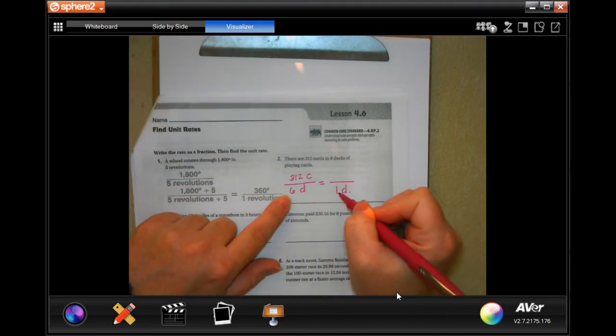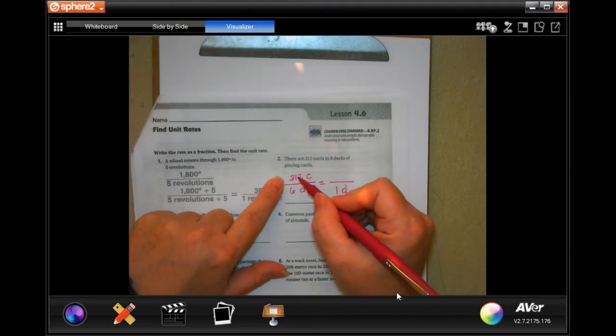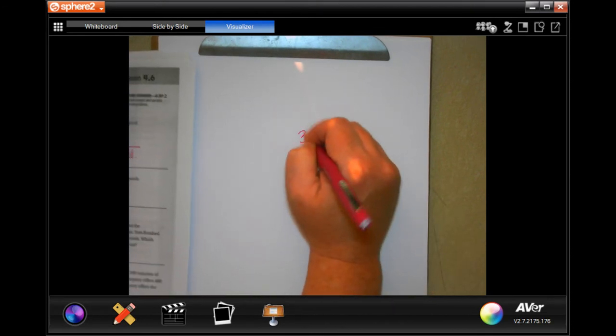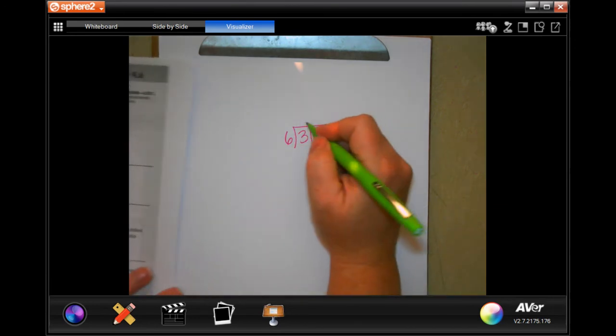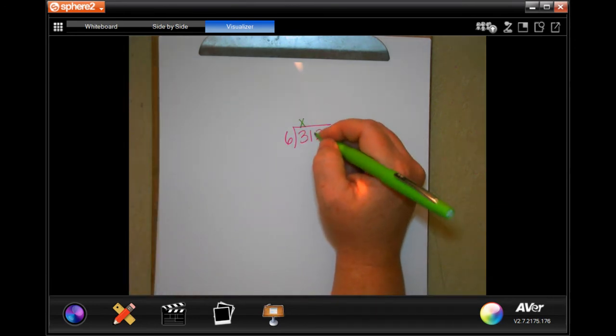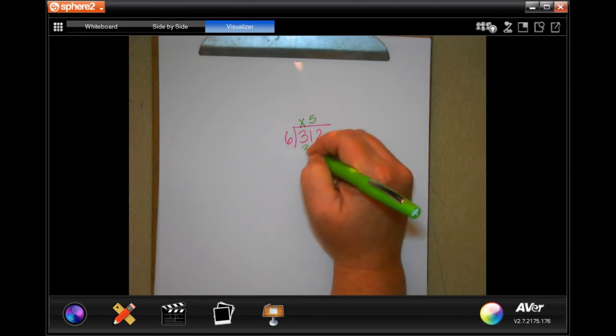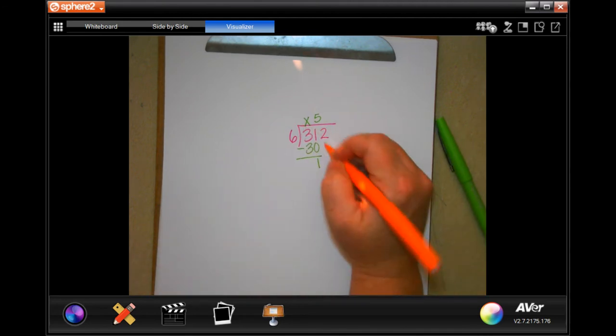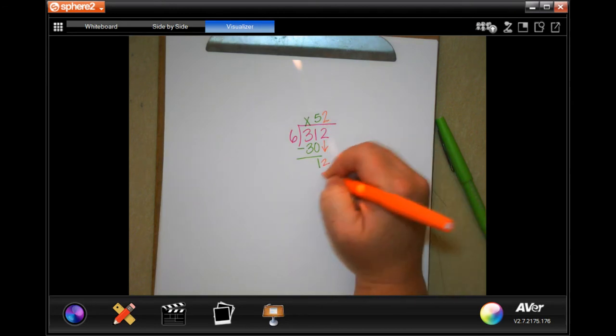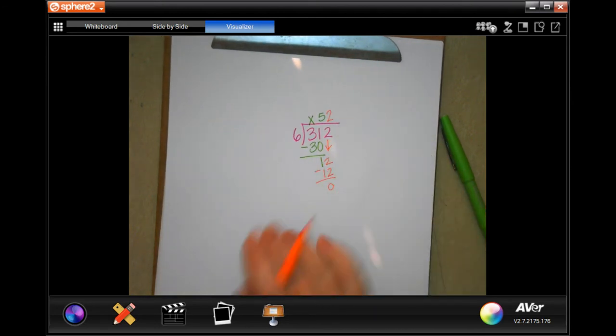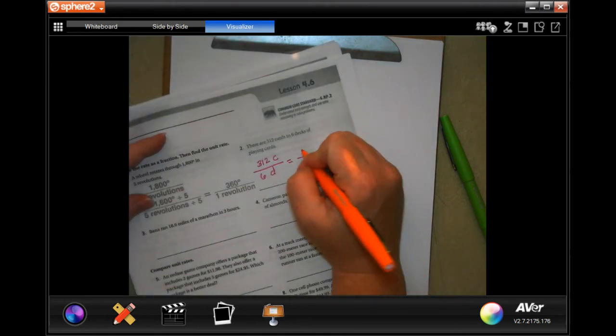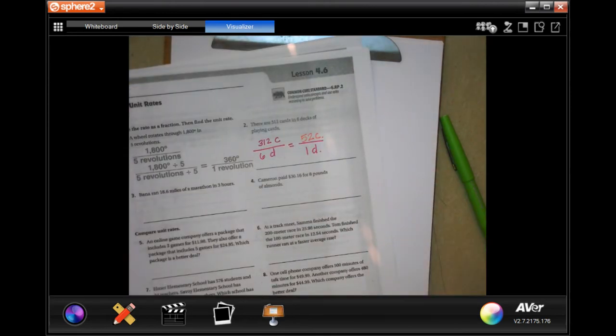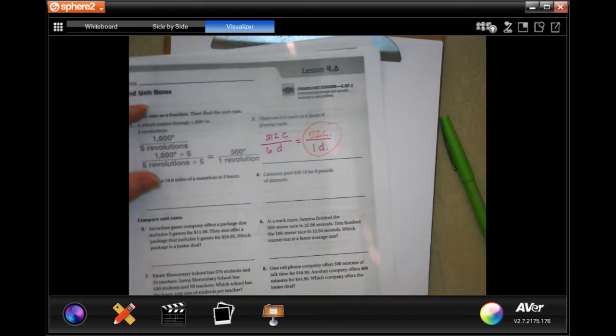So in order to get from 6 to 1, I divide it by 6. So I'm going to divide by 6 for the top as well. 6 is not going to go into 3, placeholder. So we're going to 31, 5 times. 5 times 6 is 30. Subtract and I get 1. 1 is definitely smaller than 6, so I can bring down my 2. 6 goes into 12, 2 times. 2 times 6 is 12, subtract, get 0. So 52 cards in one deck. That's your answer.